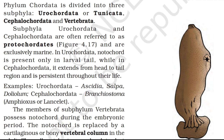Phylum Chordata is divided into three sub-phyla: Urochordata or Tunicata, Cephalochordata and Vertebrata. Sub-phyla Urochordata and Cephalochordata are often referred to as protochordates and are exclusively marine. In Urochordata, notochord is present only in the larval tail, while in Cephalochordata it extends from head to tail region and is persistent throughout life. Examples of Urochordata: Ascidia, Salpa, Doliolum. Examples of Cephalochordata: Branchiostoma (Amphioxus or lancelet).